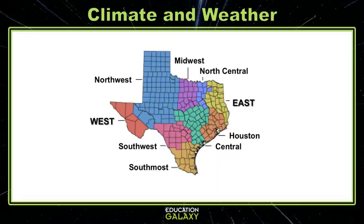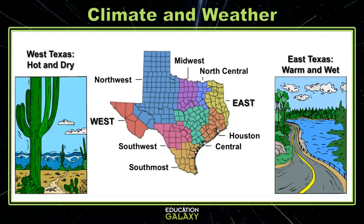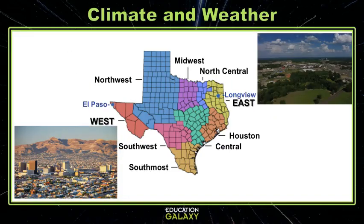If we look at Texas and say that East Texas has a warm and wet climate while West Texas has a hot and dry climate, these both describe their climate, and that is different from saying the weather forecast for El Paso or Longview. Even though El Paso has a dry climate over the whole year, they still have wet weather and rainy days. And the opposite is true for Longview — even though it is a wetter climate, sometimes they have dry, hot weather. That would be an example of weather.